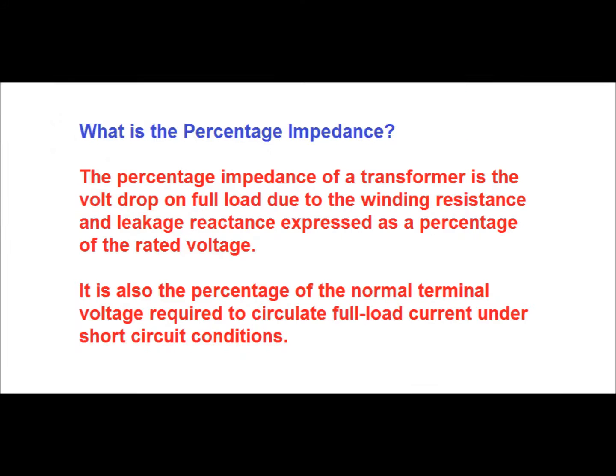What is the percentage impedance of a power transformer? The percentage impedance of a transformer is the voltage drop on full load due to the winding resistance and leakage reactance, i.e. impedance of the transformer, expressed as a percentage of the rated voltage. Alternatively, it is also the percentage of the normal terminal voltage required to circulate full load current under short circuit condition.